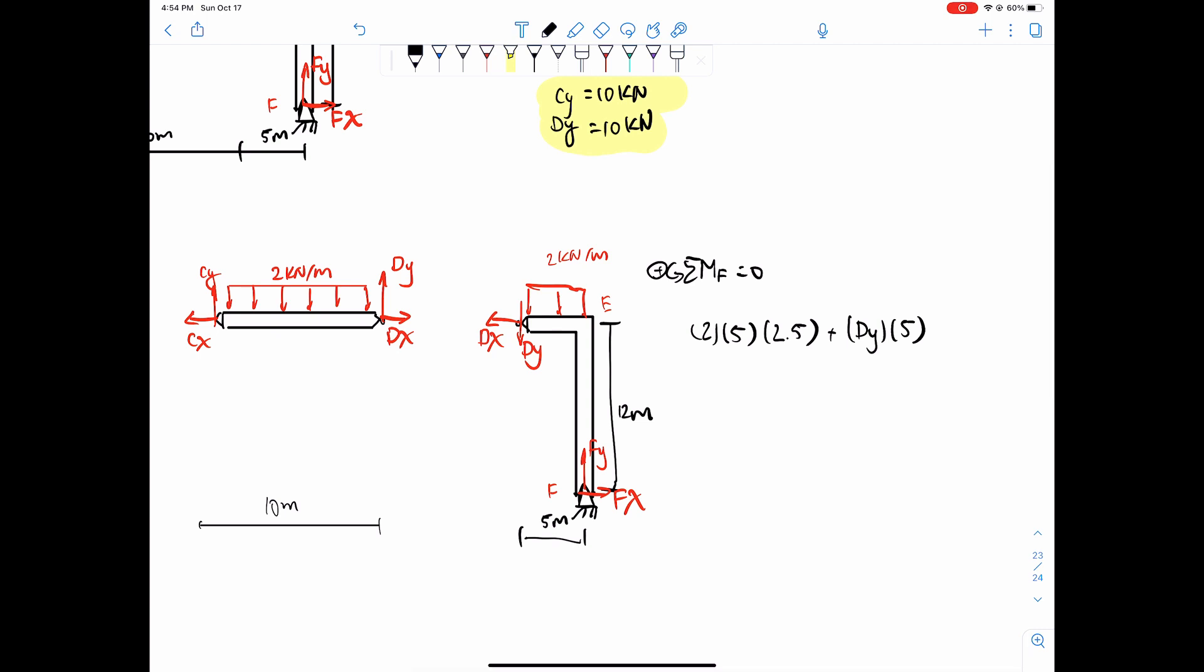Plus dy times 5, and then finally dx. dx is also causing the system to spin counterclockwise, just imagine pulling it. So plus dx times 12 and set that equal to zero. Now we know dy is equal to 10, so we can get that replaced there. We got negative 12 dx equals 75, so dx equals negative 6.25 kilonewtons.